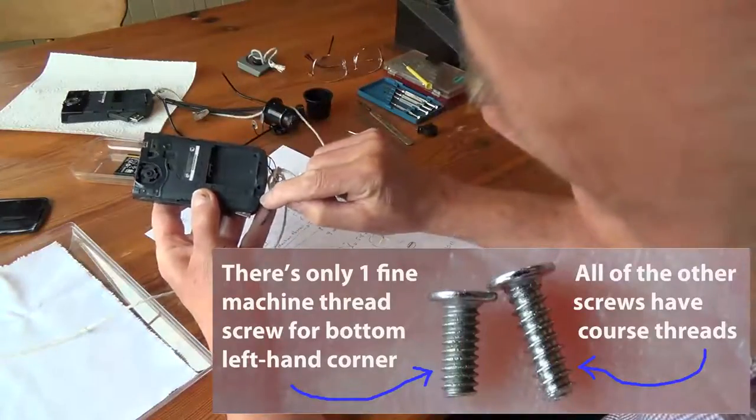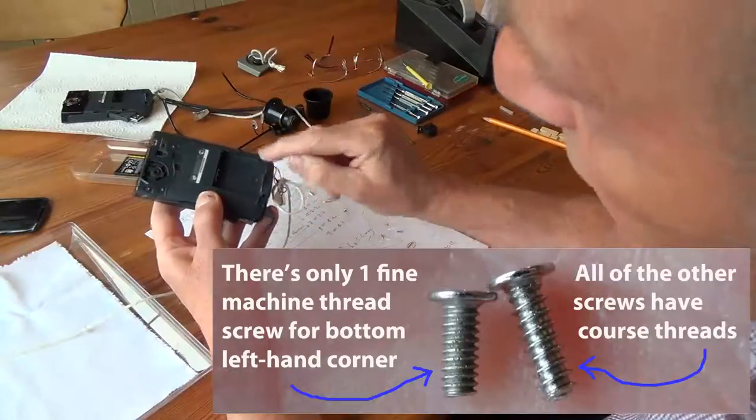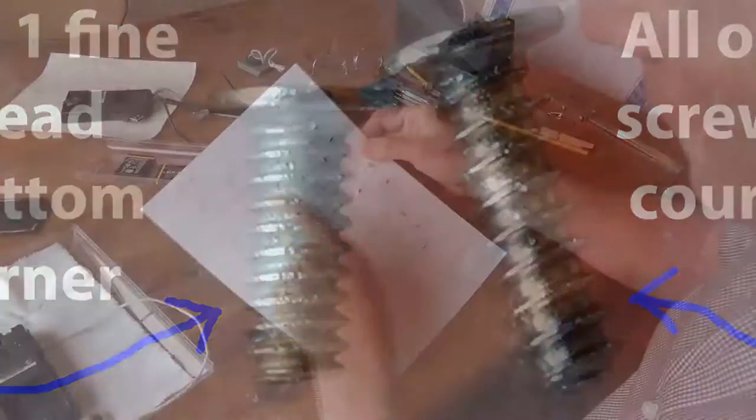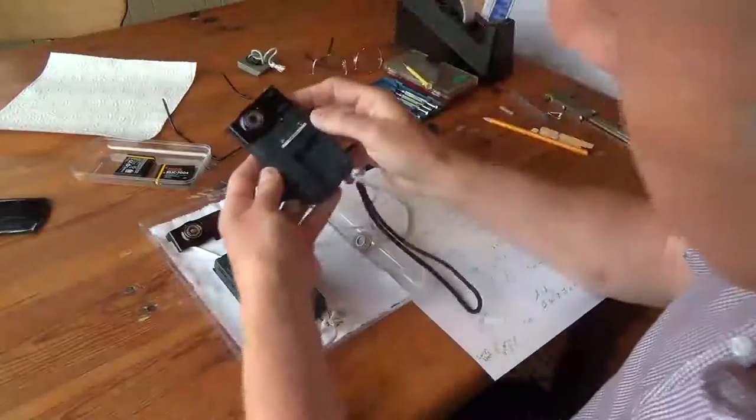That screw is a machine screw, it's a fine thread. The others are all coarse threads and again I'll give you some close-ups of those.